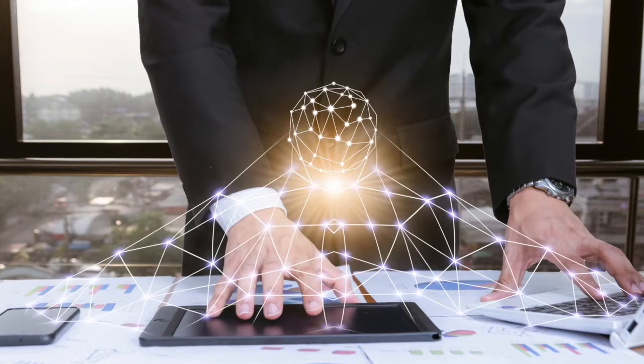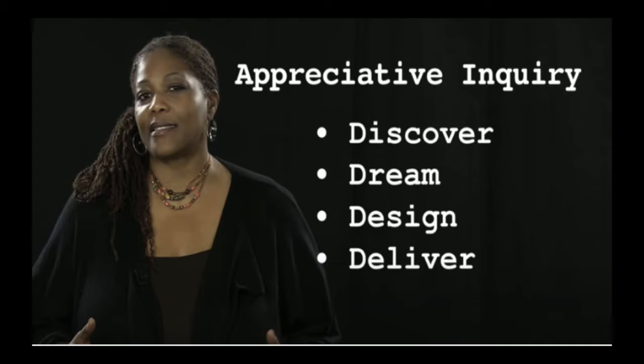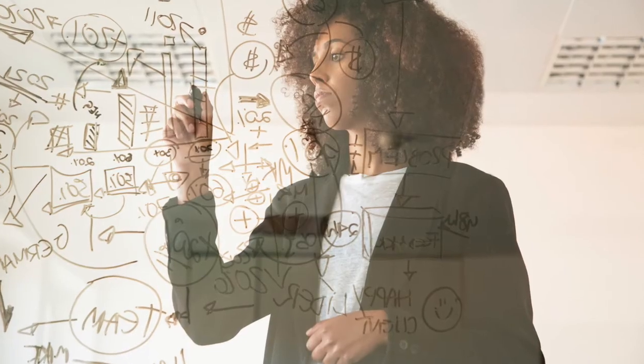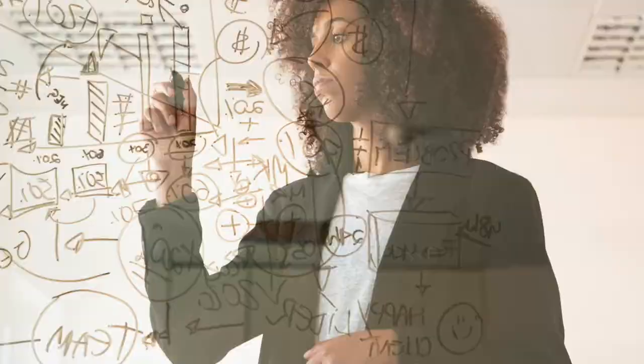A four-day design might have the following activities. Day one is to discover the organization's positive change core, or what is possible within the organization. Day two is to dream or envision potential for influence and impact. Day three is designing, or building into the strategies, processes, and systems of the organization — though it doesn't have to be an organization; it could also be used for a site for urban design or site planning.